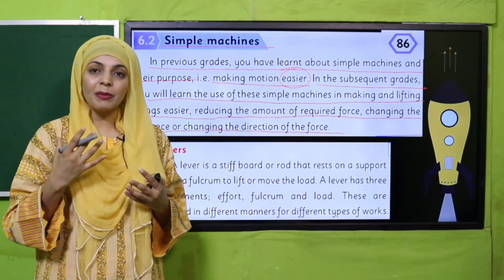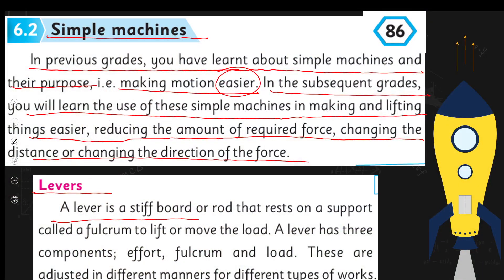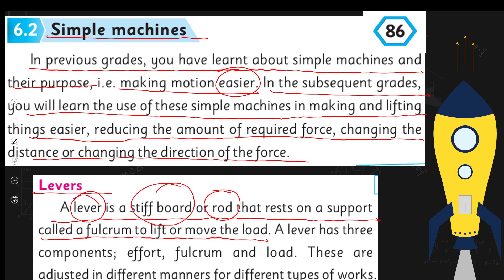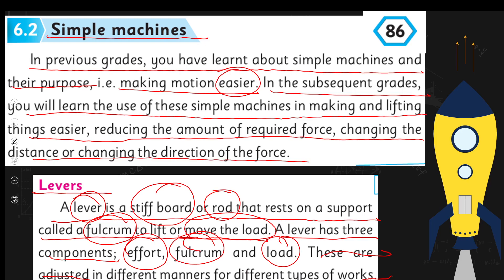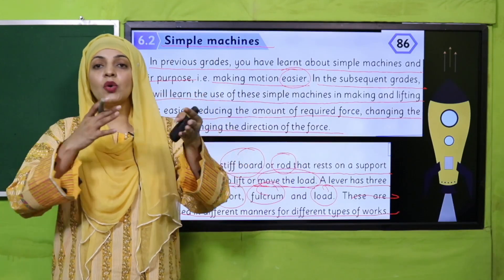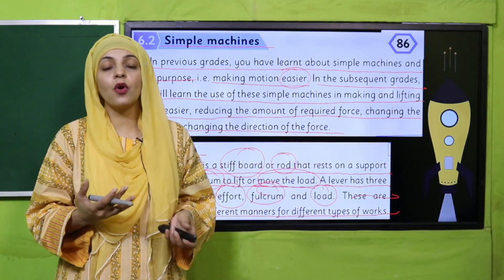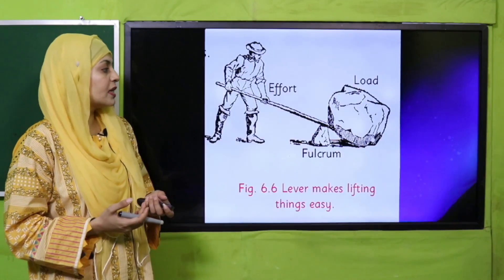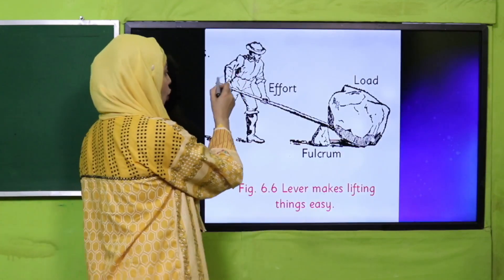Now let's move forward to levers. What is a lever? It is also a simple machine. Let's read: 'A lever is a stiff board or rod that rests on a support called a fulcrum, to lift or move the load.' Basically, a lever is a stiff board or rod that rests on a fulcrum support in order to lift a heavy load. A lever has three components: effort, fulcrum, and load, which are adjusted in different positions for different types of work.